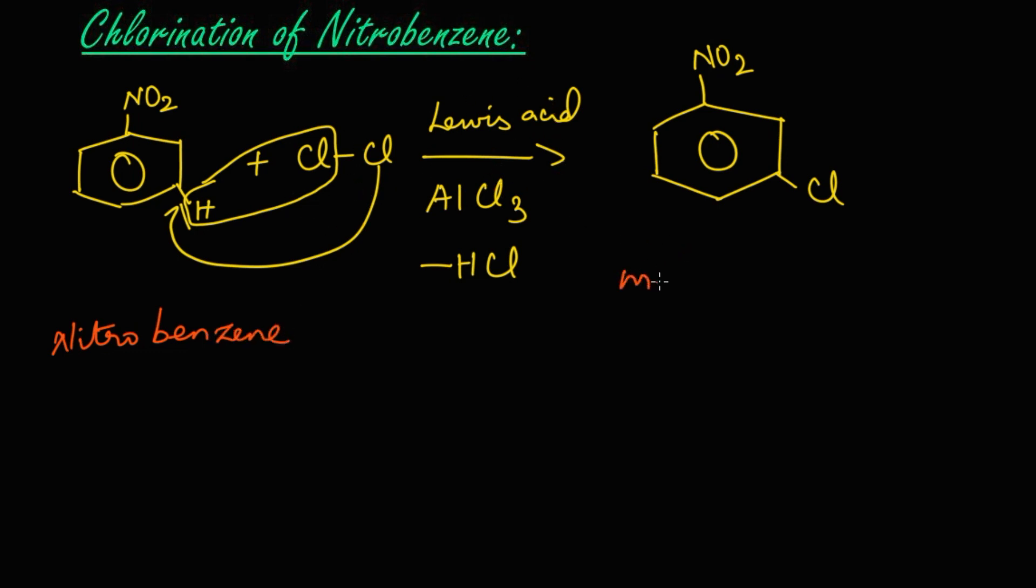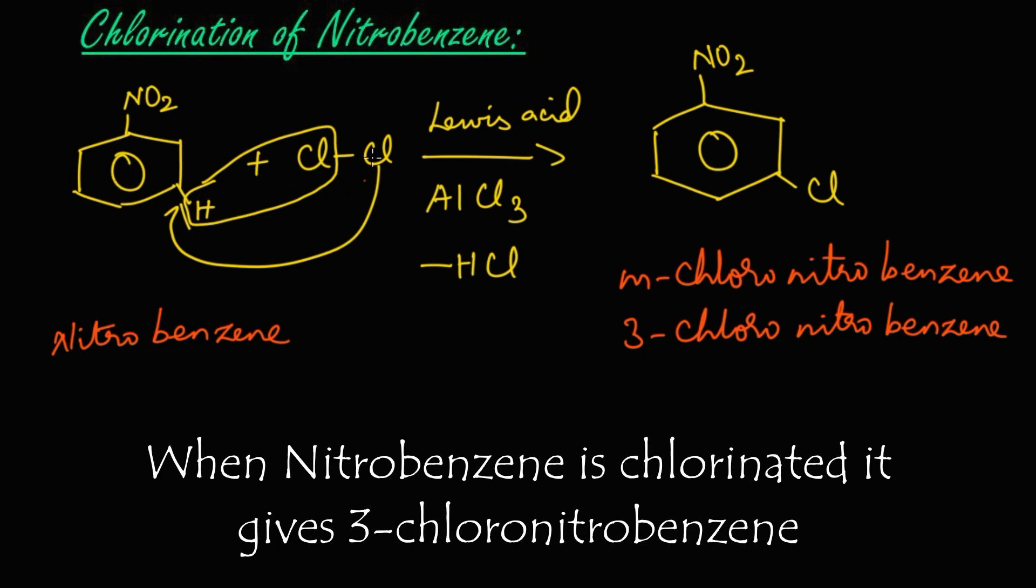We get meta-chloro nitrobenzene, or else 3-chloro nitrobenzene. Let's summarize the reaction now. When nitrobenzene undergoes chlorination in presence of Lewis acid, that is AlCl3, we get meta-chloro nitrobenzene, or else 3-chloro nitrobenzene as the product.